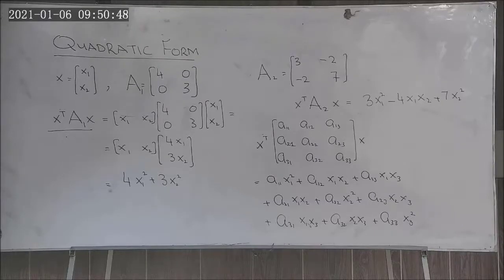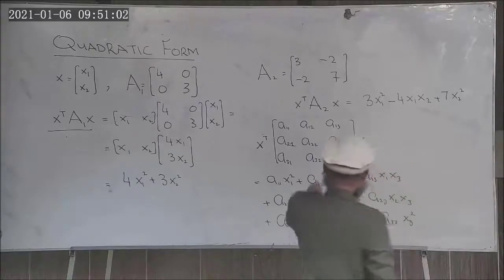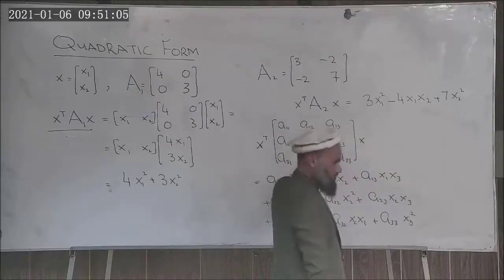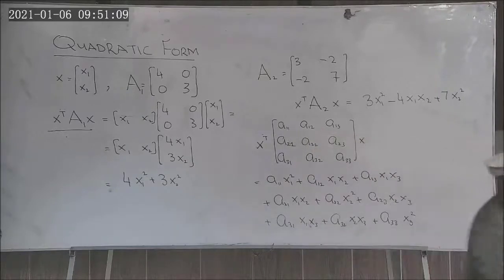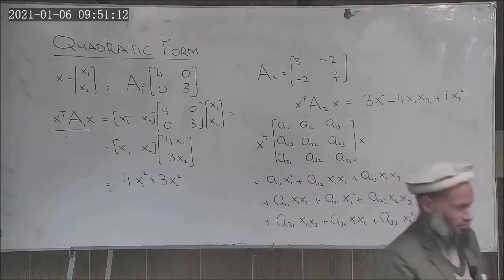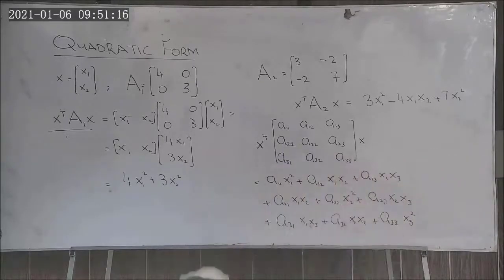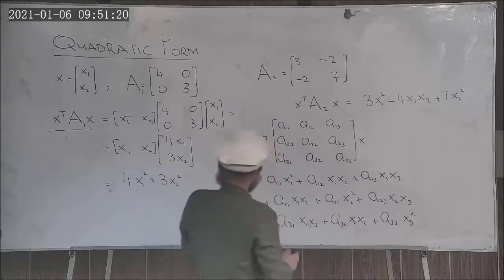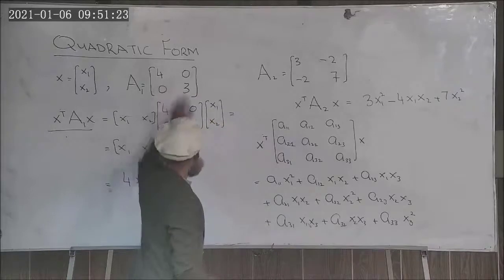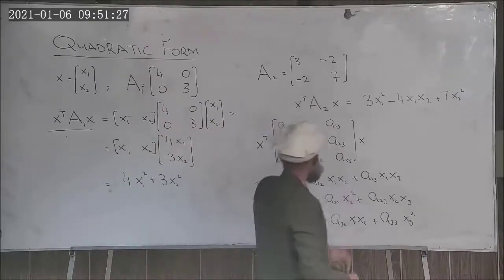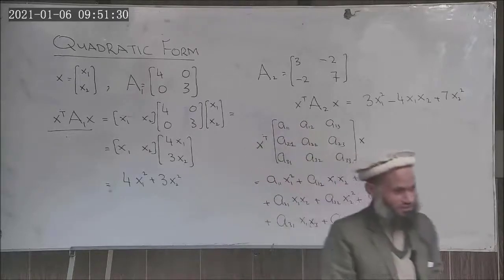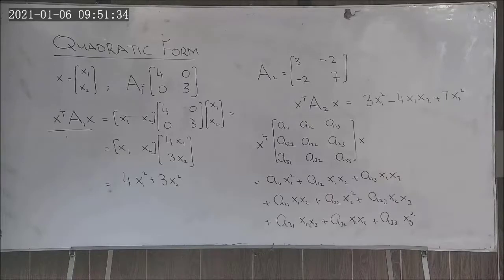The form x^T A x is called a quadratic form and will always be of this structure. Here, A must be a square matrix. Furthermore, this matrix A — even if it is not symmetric — we can always write a corresponding symmetric matrix for any given quadratic form. Let's elaborate on this point.